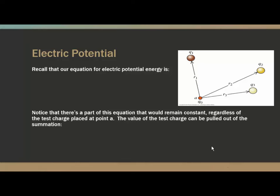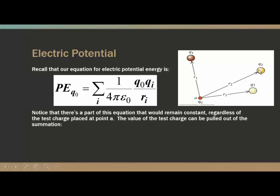From our last video, we used a graphic to talk about how to calculate the electric potential energy of a configuration, or if the configuration was already in place and we wanted to bring a fourth charge Q-naught into position — how much energy or work that would require. The formula is KQQ over R, and we sum up all the potential energies between Q-naught and Q-i. In this case we have three of them.